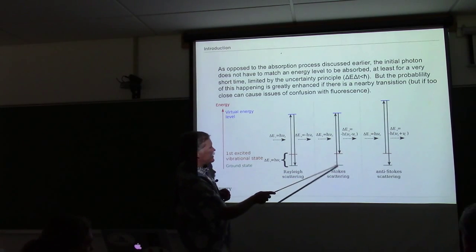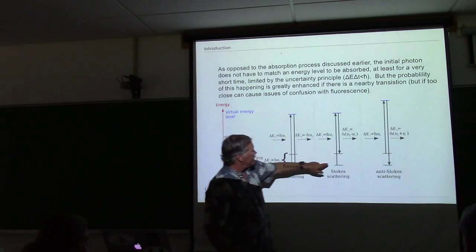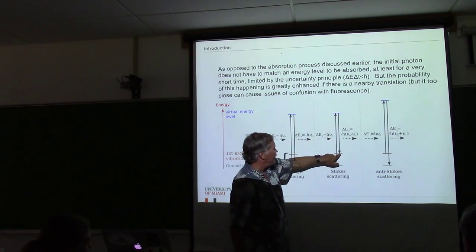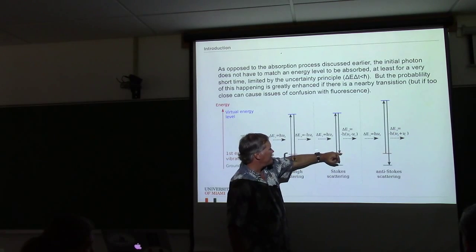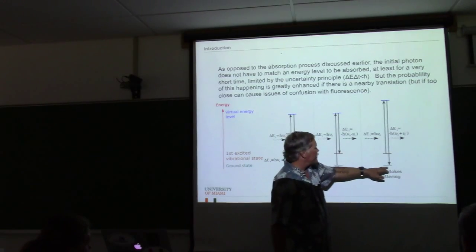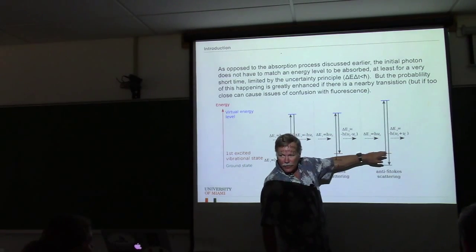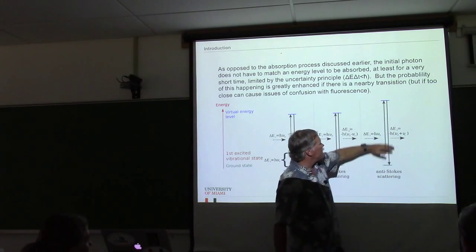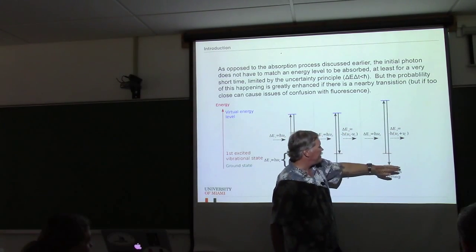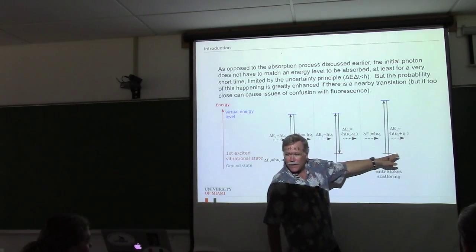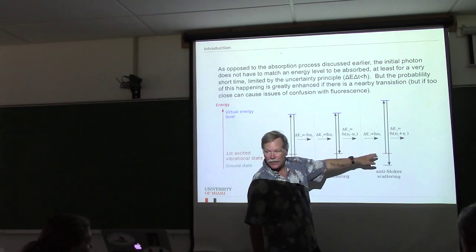This is Stokes scattering: you come in, excite here, come off with less energy — the interaction has moved the molecule from one energy level to a higher one. In anti-Stokes, the molecule is already excited. The photon comes in, excites up to the virtual state, then comes down lower, so the photon that comes off actually has more energy than the incoming photon.